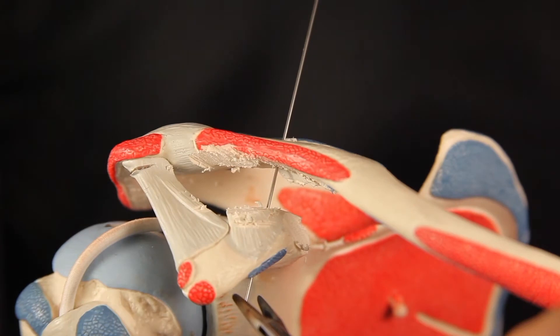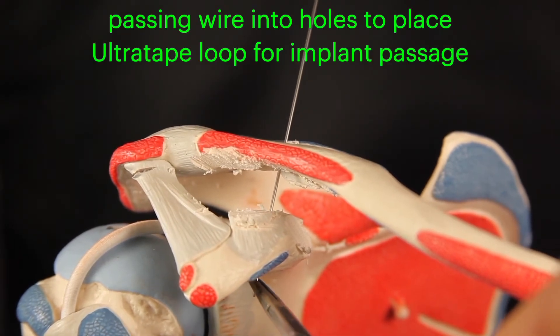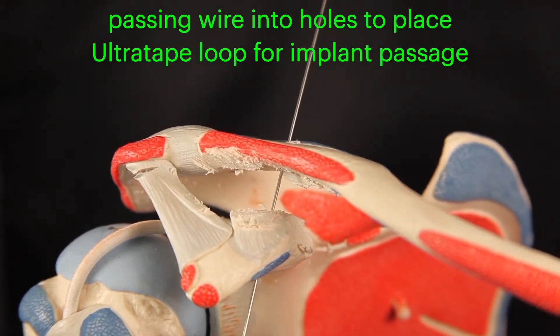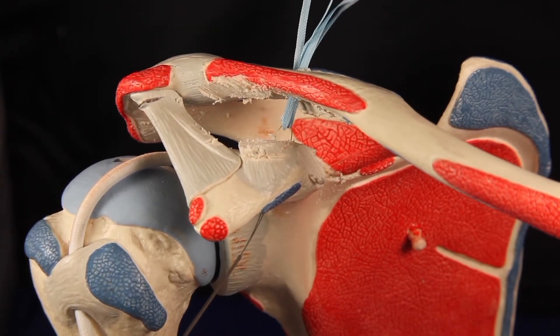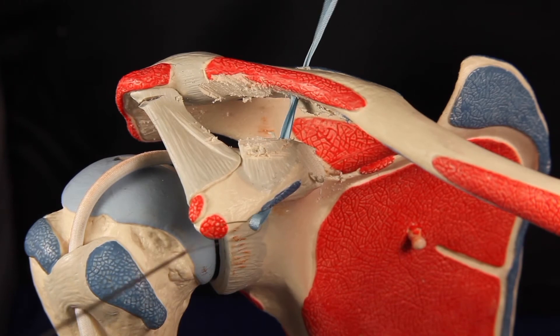A wire loop is then passed through both drill holes and retrieved underneath the coracoid. A folded ultra tape is passed into the loop at the end and pulled out, creating a retrograde loop for passing the implant.